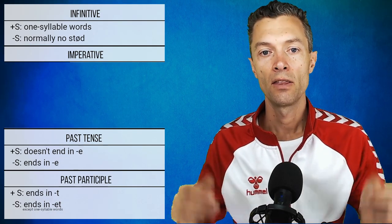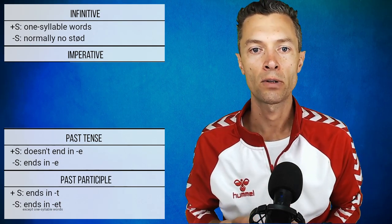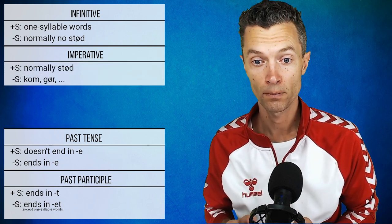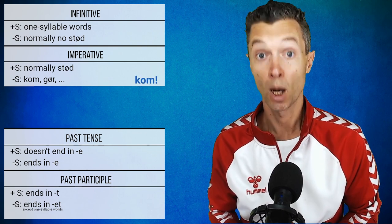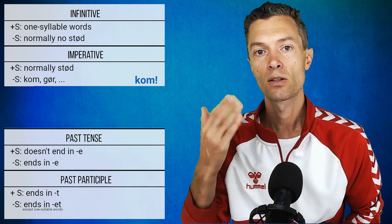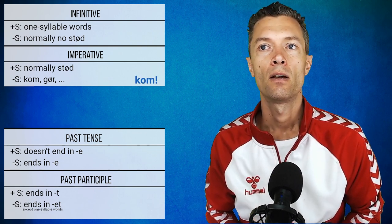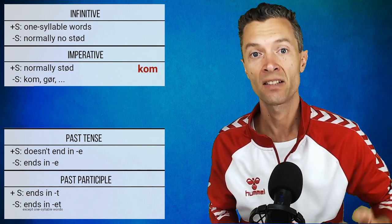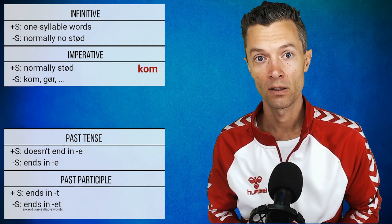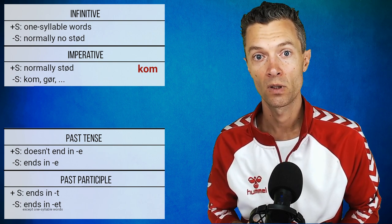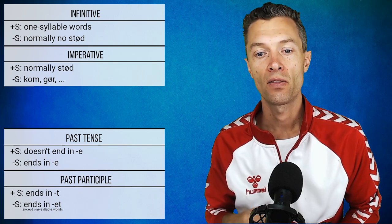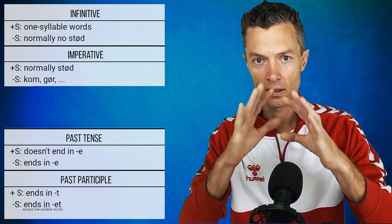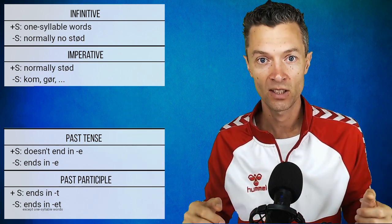The next verb form is the imperative. I already talked about the fact that the imperative normally always has stød, but there are some exceptions. For example, 'kom' — I don't say 'kom' with stød. Why? Because 'kom' can also be the past tense form meaning 'she came, he came', and that form has stød. So we don't put stød in the imperative form in order to differentiate between the two.